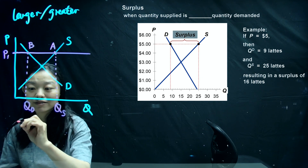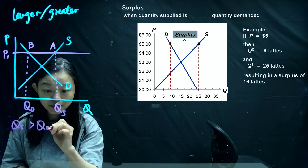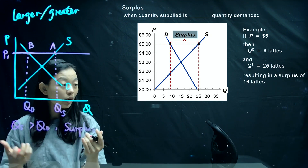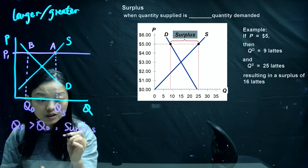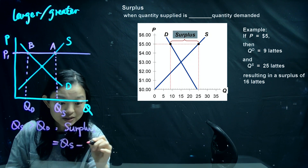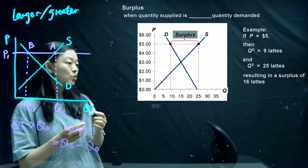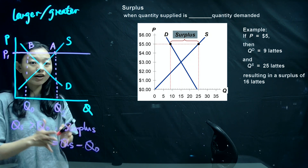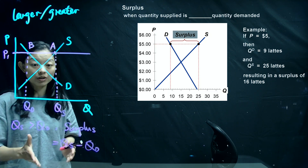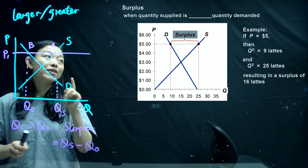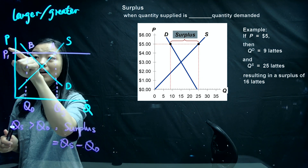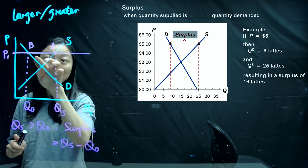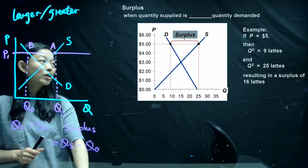In this case, we have quantity supplied larger than quantity demanded, which will result in surplus. The surplus equals quantity supplied minus quantity demanded. In this case, quantity supplied equals 25 and quantity demanded equals 9, giving a surplus of 16 units. The very important thing is: once you are given the market price, draw a horizontal line across the demand curve and supply curve, and find out the intersection points.